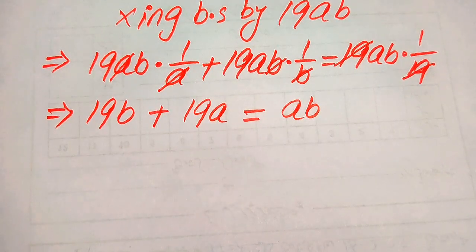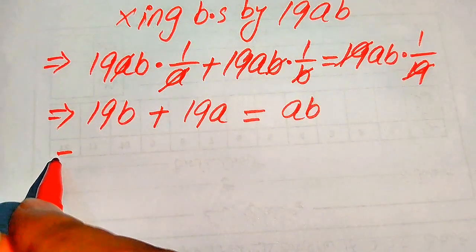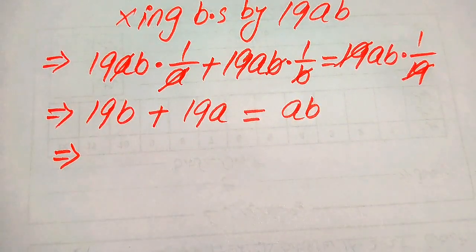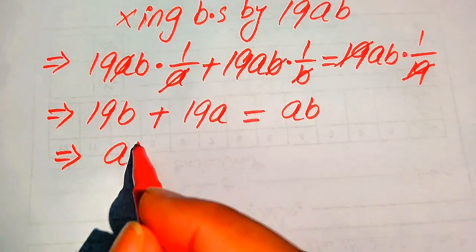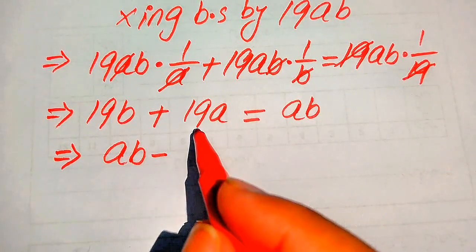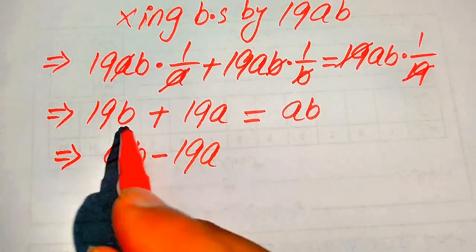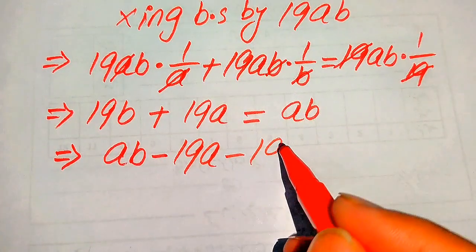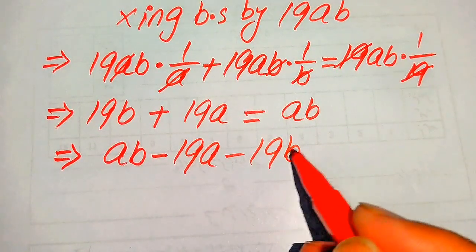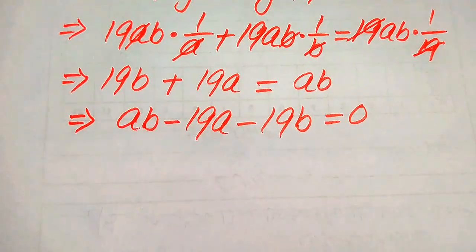In the next step, we move these two terms to the right-hand side. Both terms are positive, so when we move them to the right-hand side they become negative. We get ab minus 19a minus 19b equals 0.